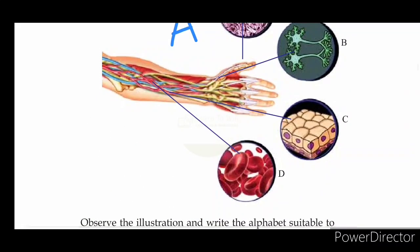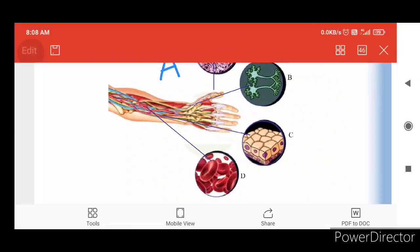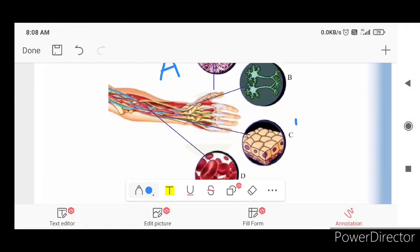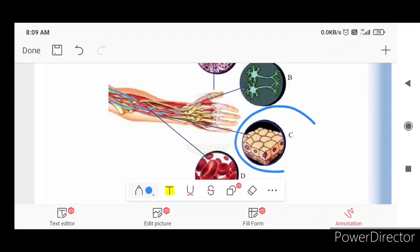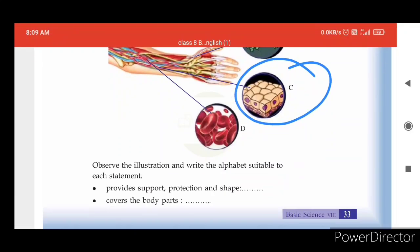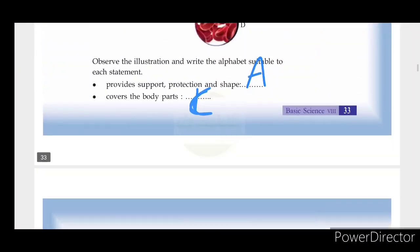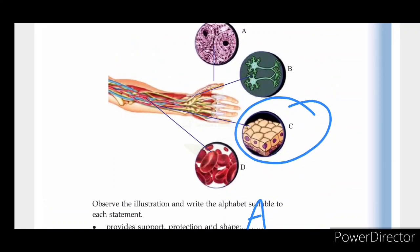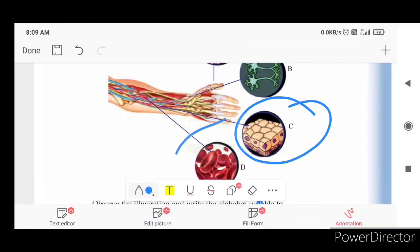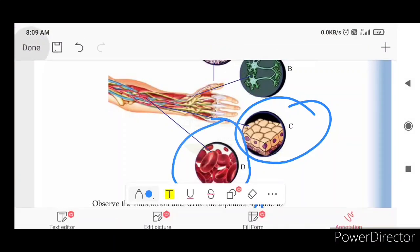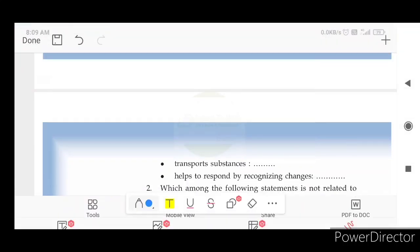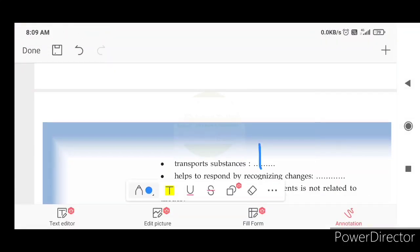The next statement is: cover the body parts. We have already learned how epithelial tissues cover the body parts. The answer is C. The next statement is: transport substances — transporting nutrients in our body. That is blood. The answer is D.